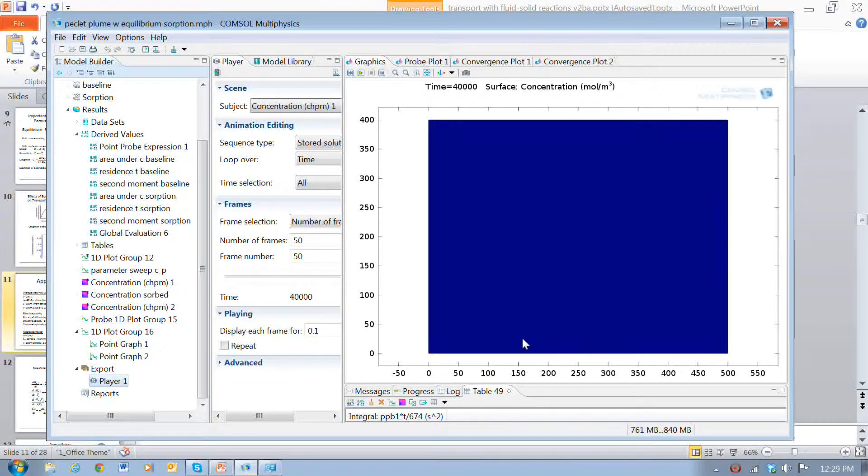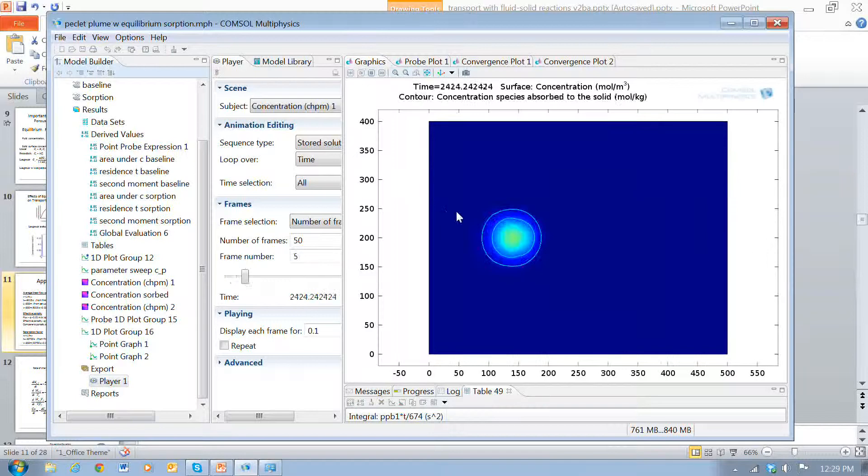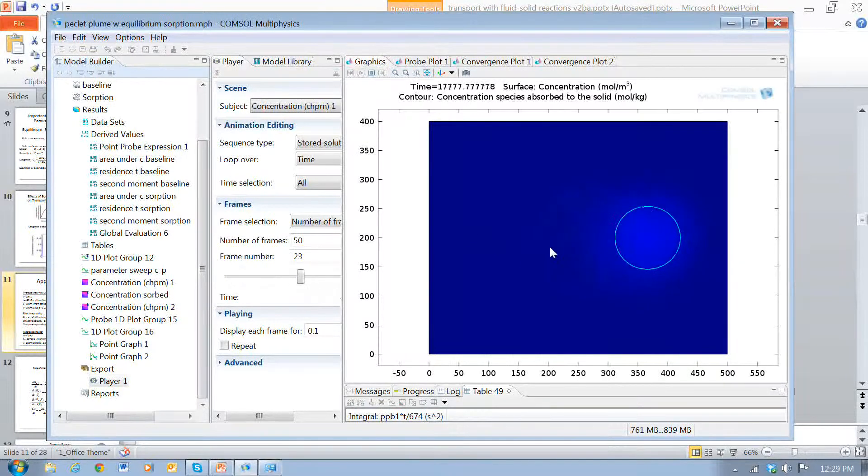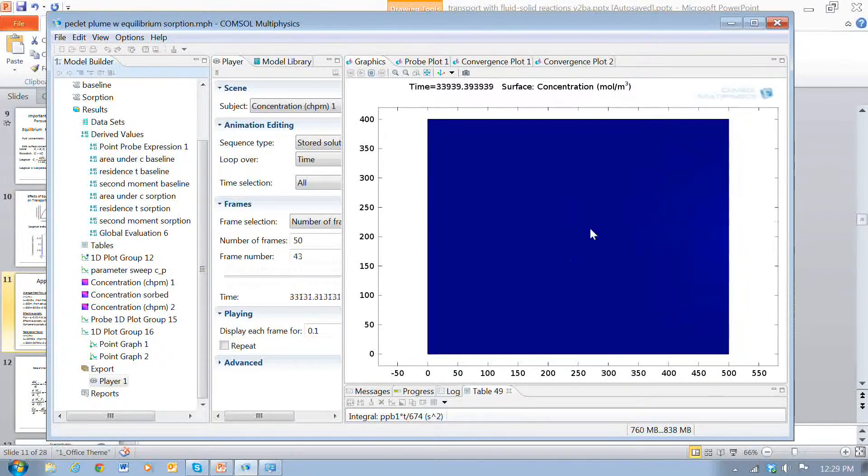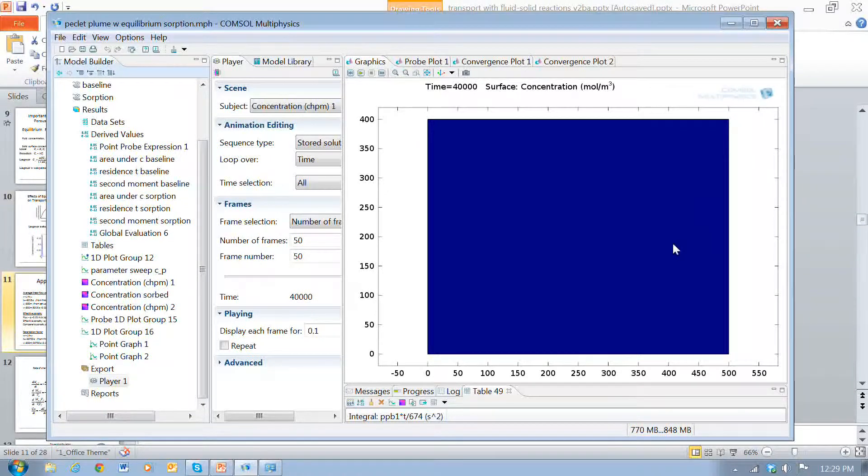Okay, so here's a simulation that shows a pulse release of a compound that's transported from left to right. There's the release, it travels in this way, dispersion causes it to spread out, the concentration to diminish, and there may be also some sorption that delays the transport of this compound.